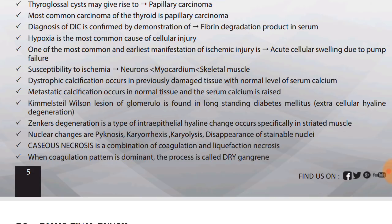Zenker's degeneration is a type of intra-epithelial hyaline change that occurs specifically in striated muscle. So Zenker's degeneration seen in striated muscle is an intracellular, intra-epithelial hyaline change.